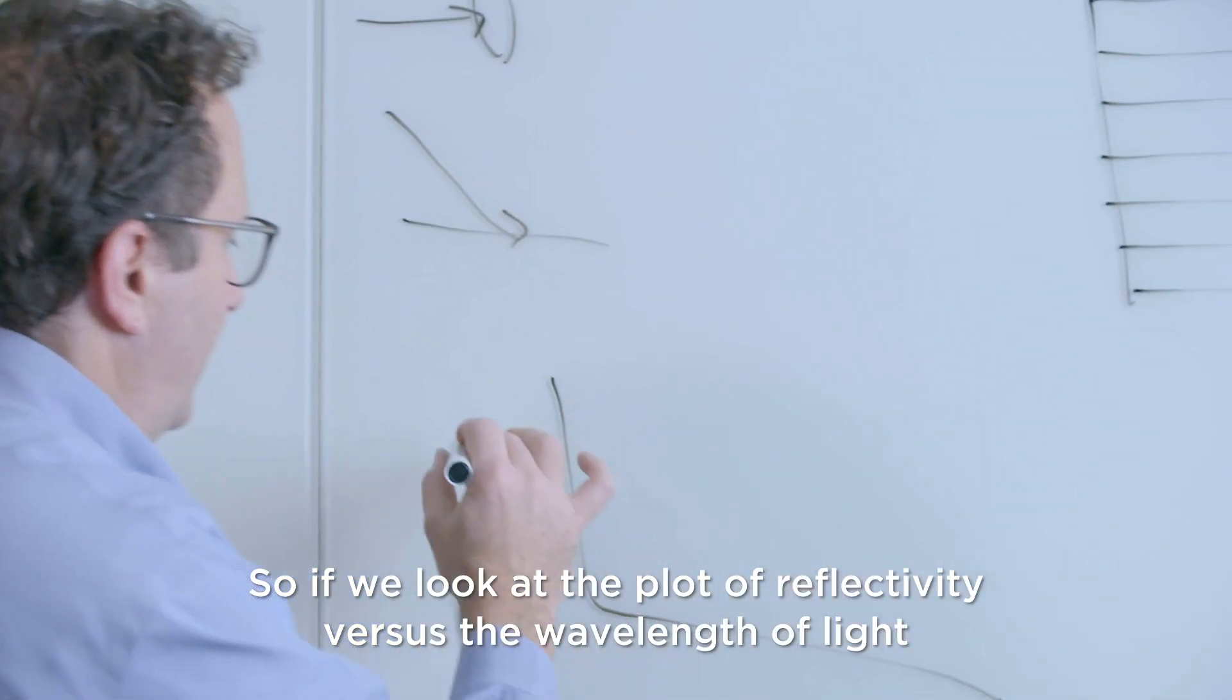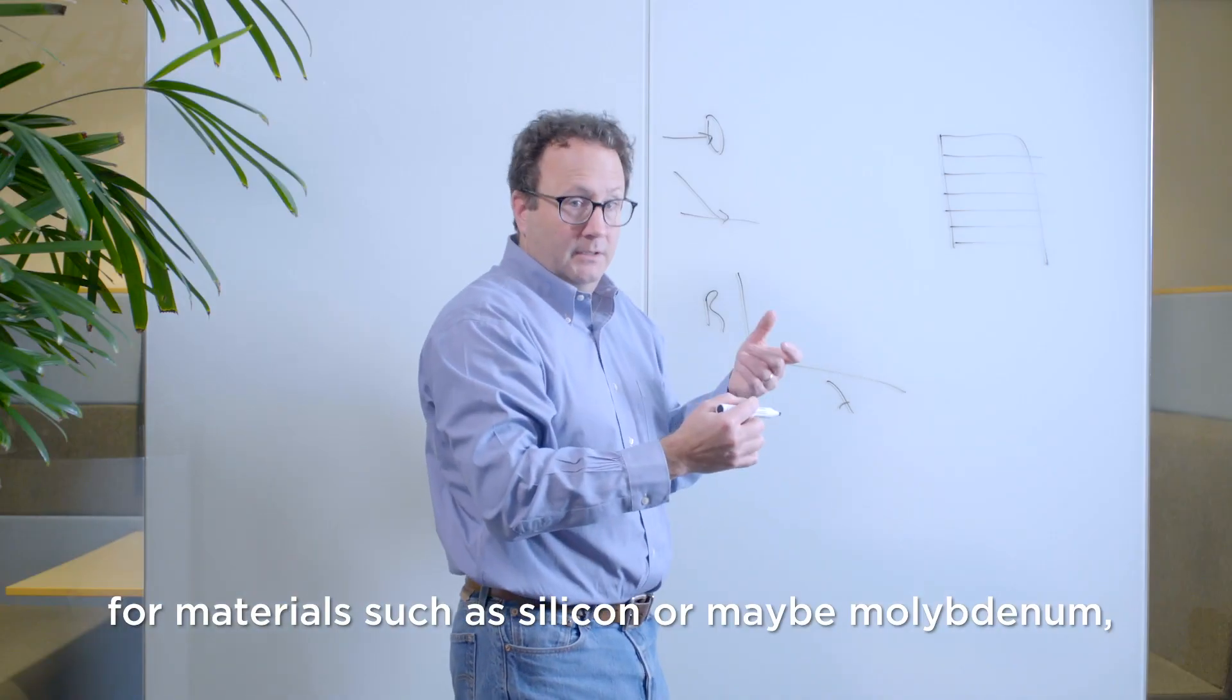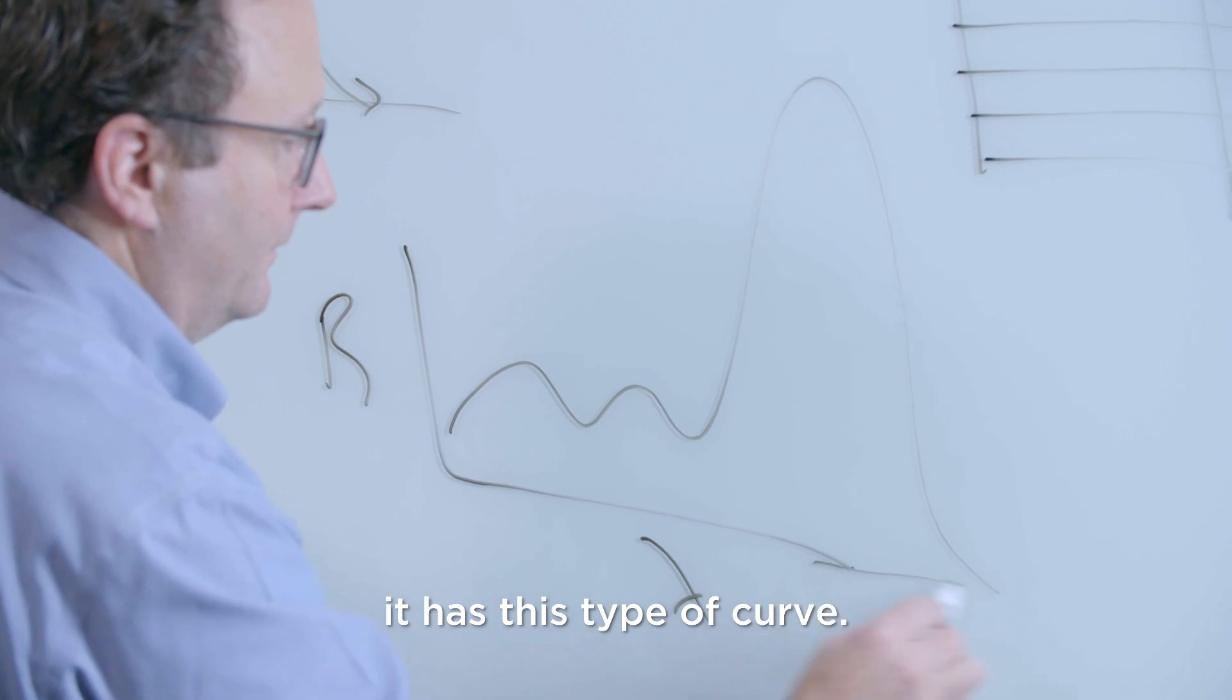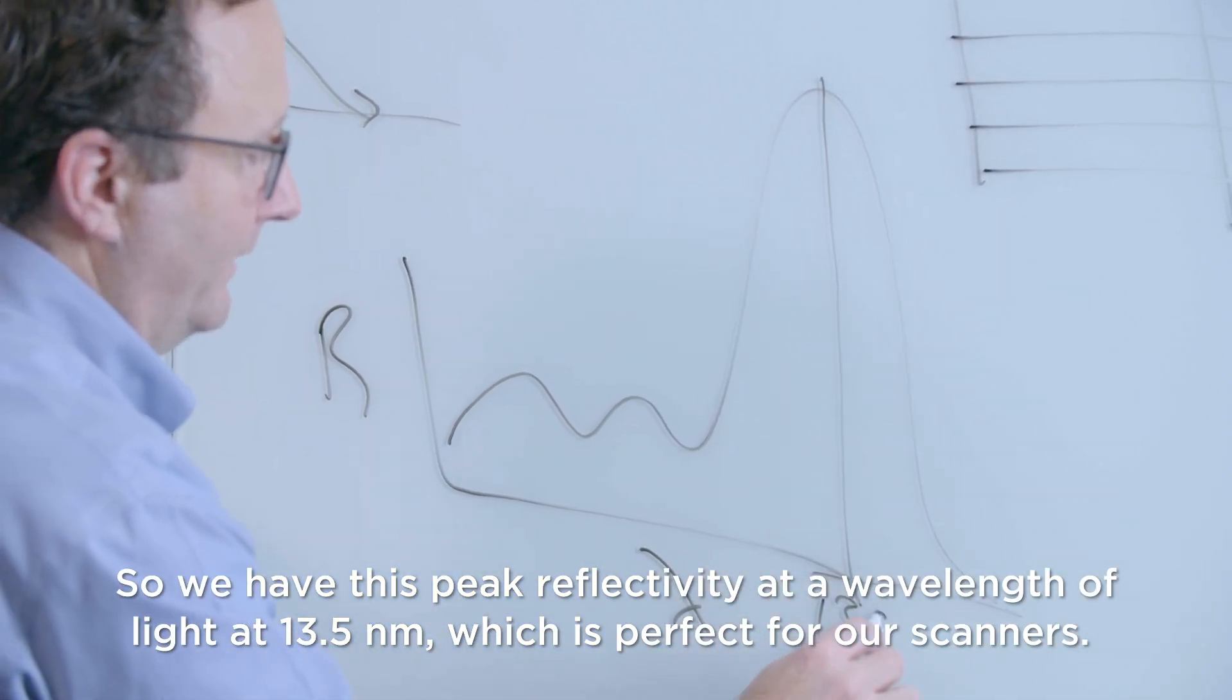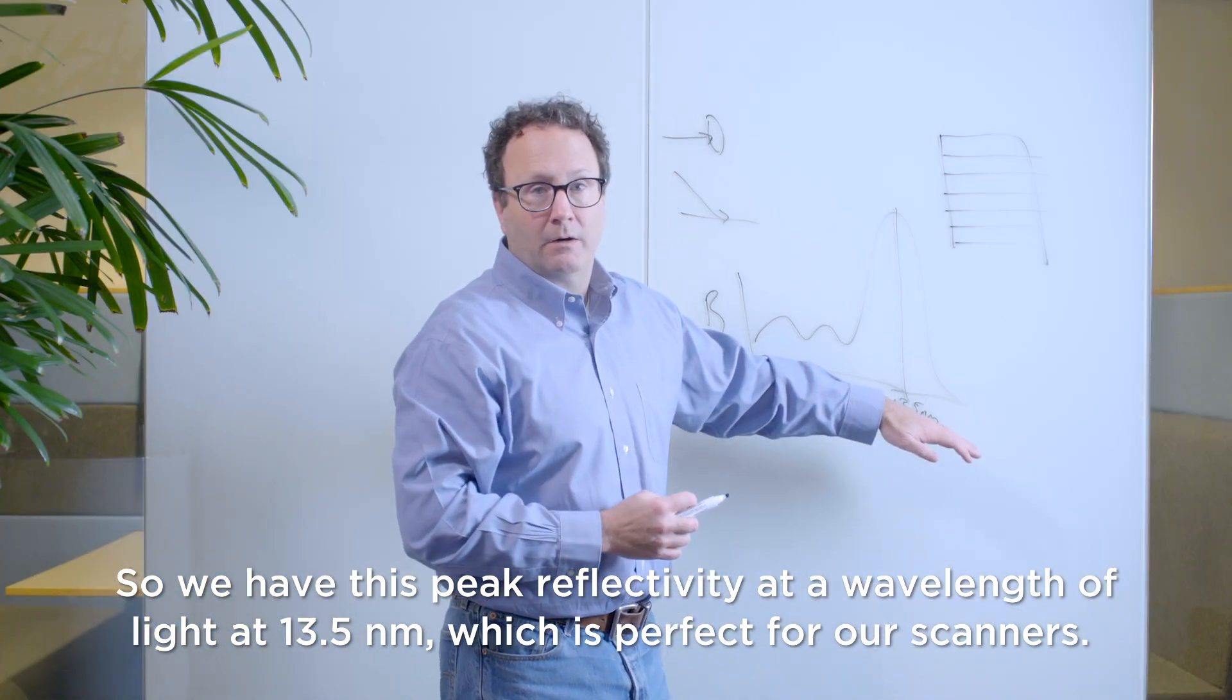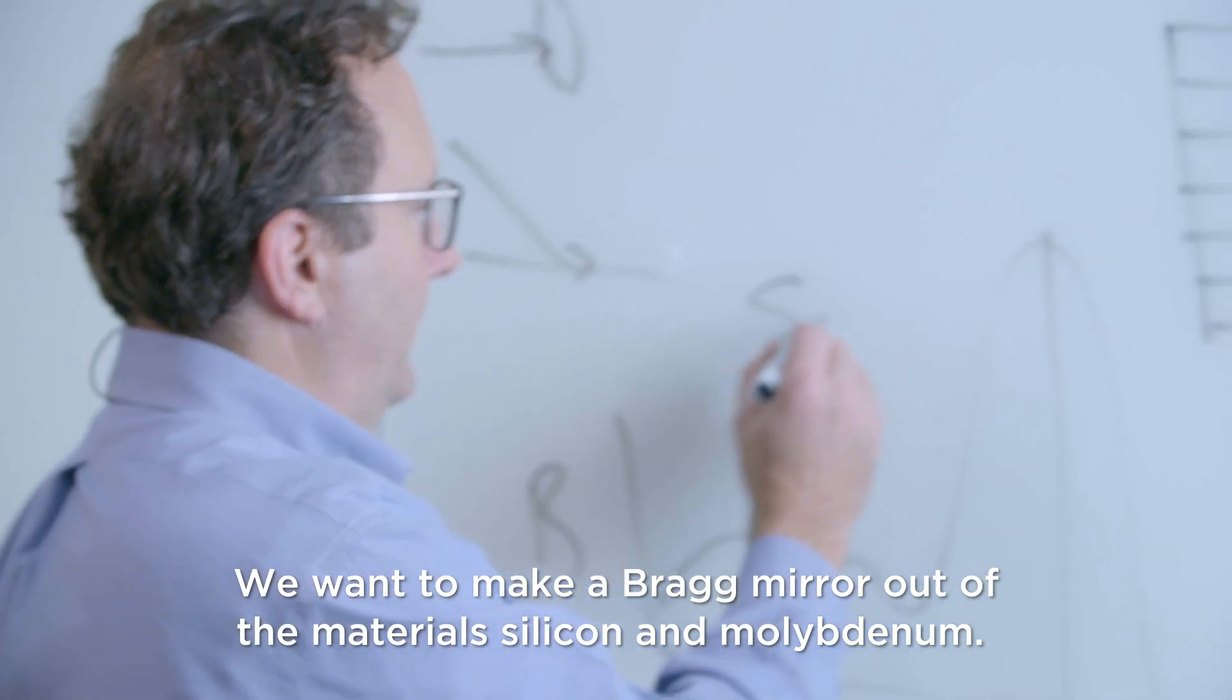If we look at a plot of reflectivity versus the wavelength of light for materials such as silicon or molybdenum, it has this type of curve. So we have this peak reflectivity at a wavelength of light at 13.5 nanometers, which is perfect for our scanners. So we want to make a Bragg mirror out of the materials silicon and molybdenum.